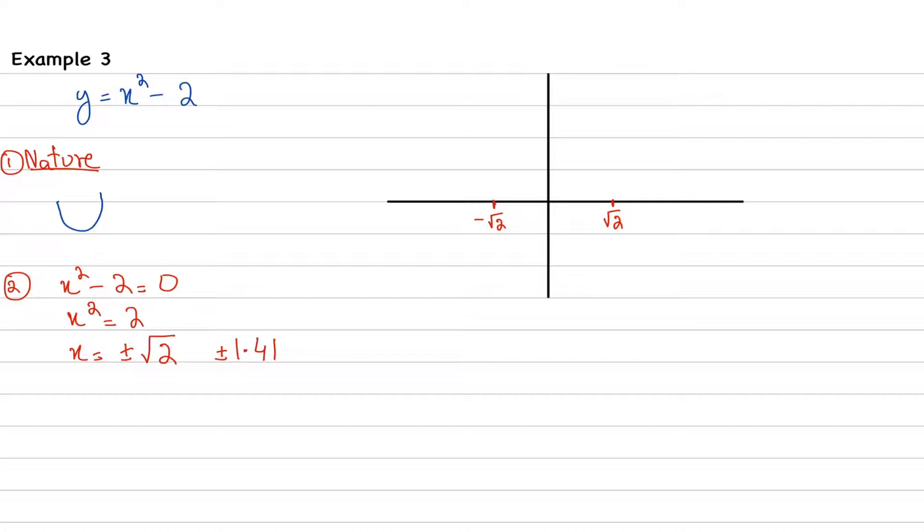Now, if we find y-intercepts, then how do we find y-intercepts? So y is equals to 0 squared minus 2. So y is equals to minus 2. So that means our y-intercept is going to be 0, negative 2. So let's mark that. So here we have the y-intercepts.